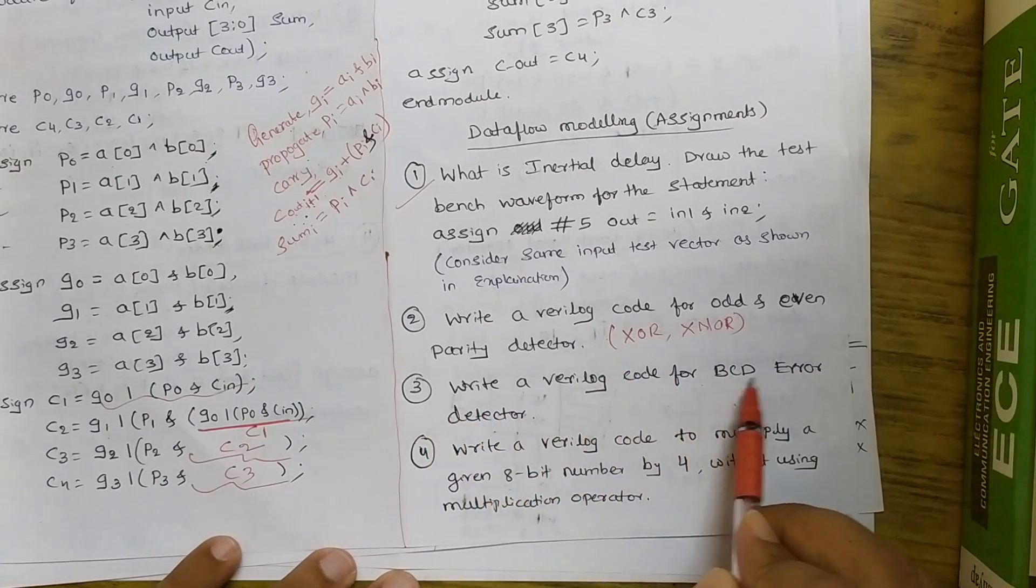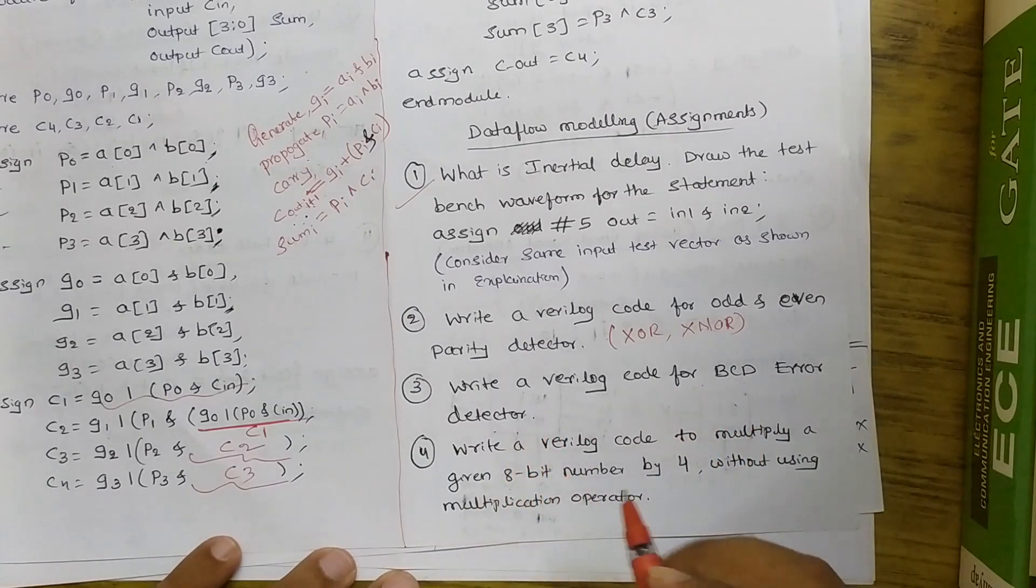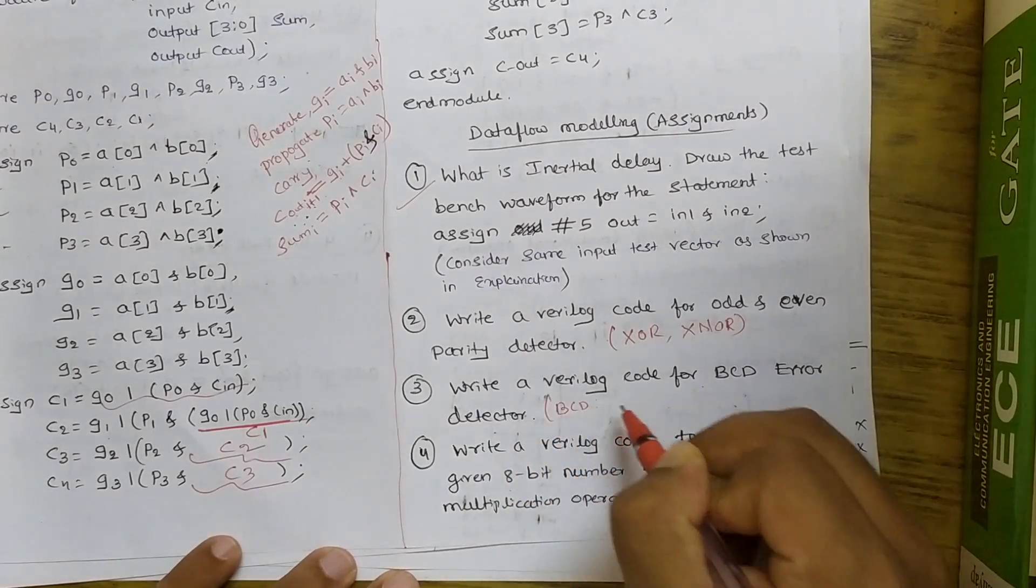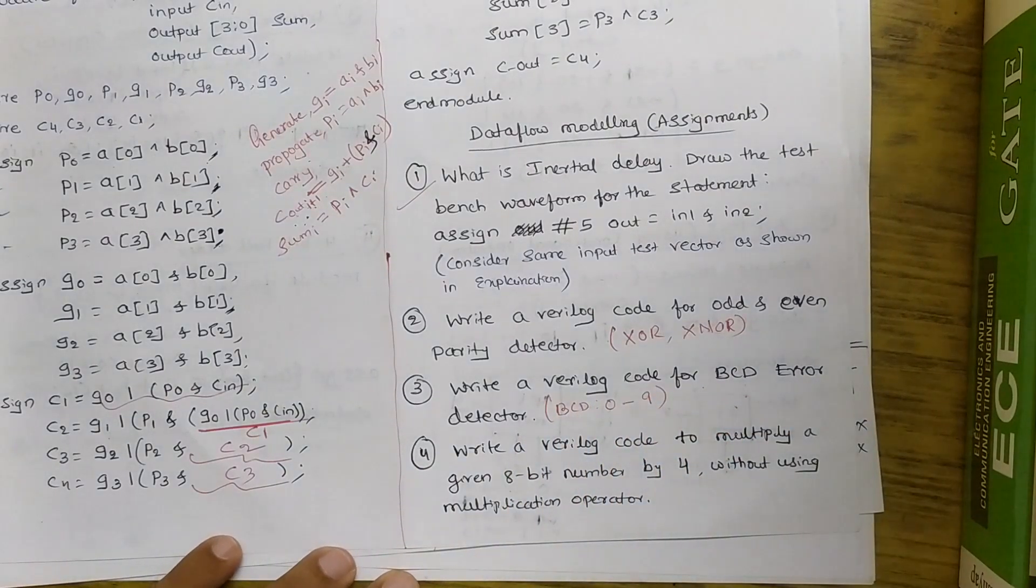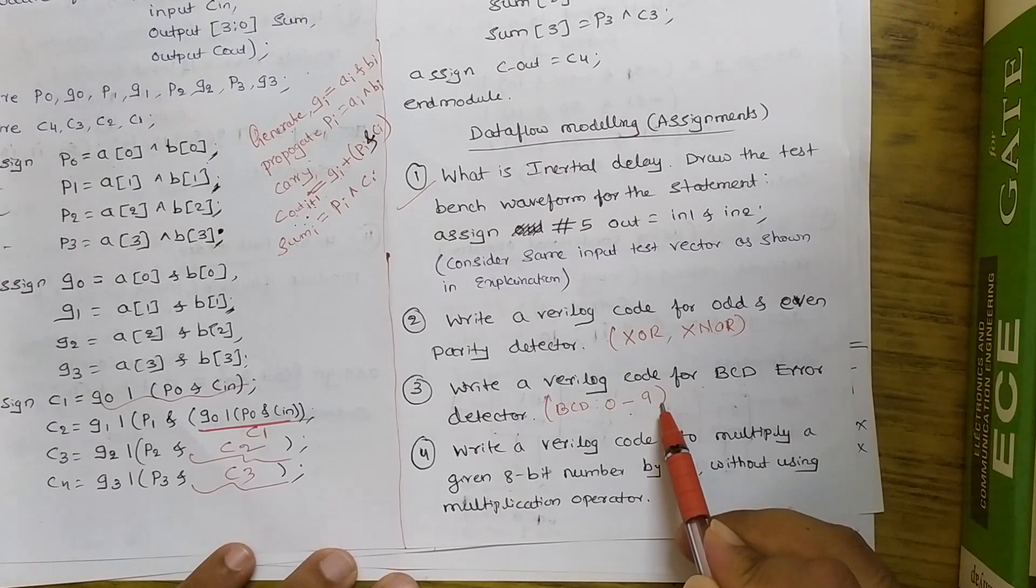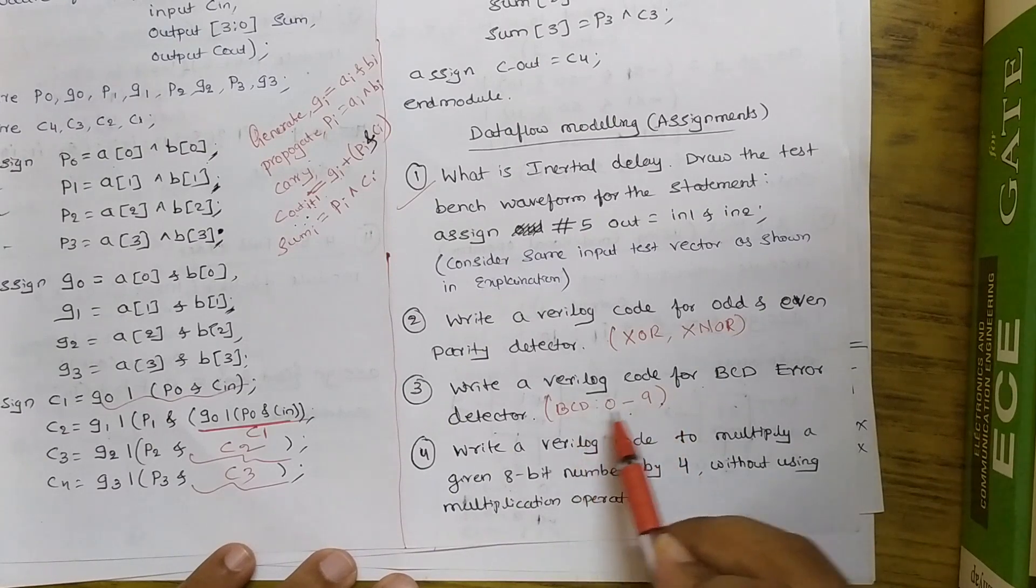Next third one. Write a Verilog code for BCD error detector. BCD means binary coded decimal which is starting from 0 till 9. So normally to represent BCD we need 4 bits. With 4 bits I can represent 16 possibilities. So here 10 are sufficient. 6 more are unused. So those 6 more whenever it will be resulted, your output should give it as error. Make error bit as 1. So for that you need to write a code.